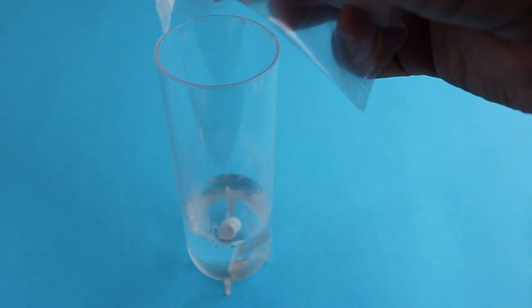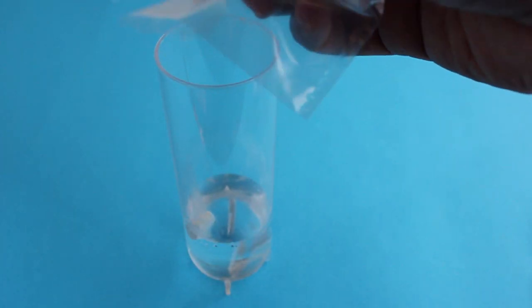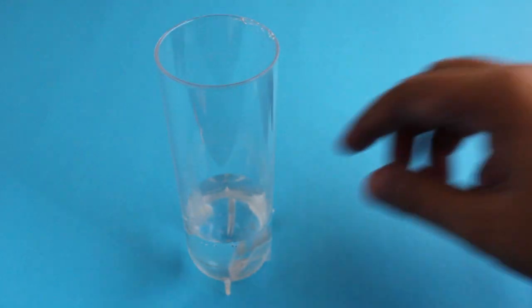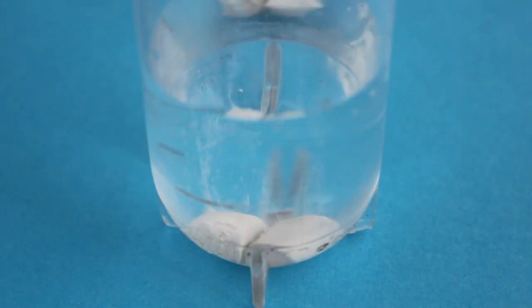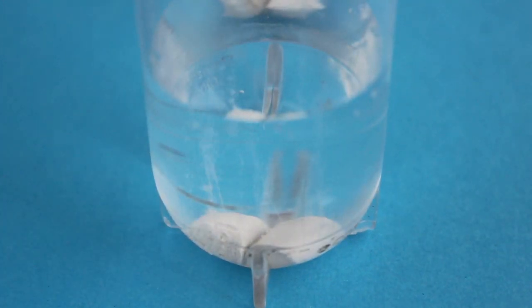And this is one of the experiments, it's called acidic corrosion. You put chalk pieces in vinegar and see them erode.